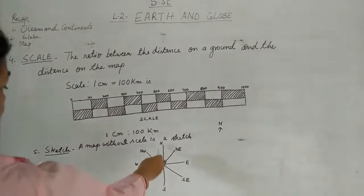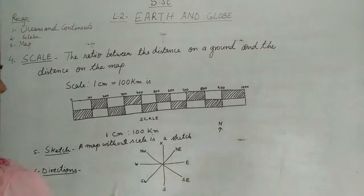These directions - that is north, south, east, west - these are the directions. And northwest, northeast, southwest, southeast - these are the sub-directions.